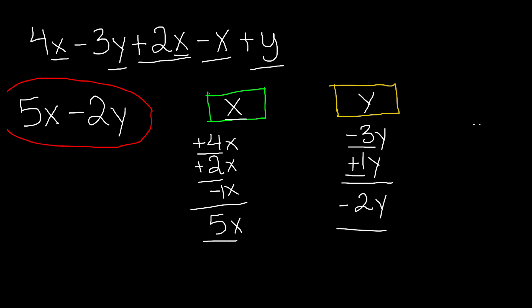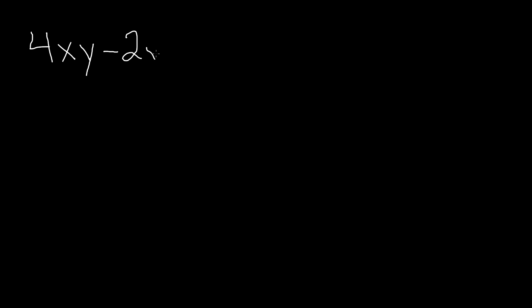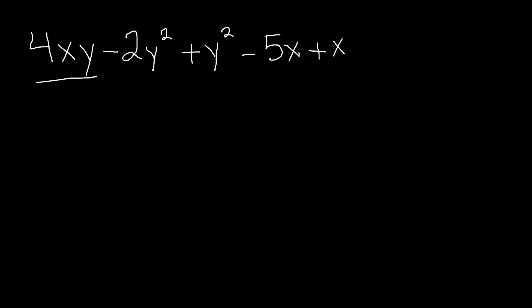Now let's do the final problem. This one is trickier because we're introducing exponents. We have 4xy, minus 2y to the power of 2, plus y to the power of 2, minus 5x, plus x. First things first — find the like terms, because we cannot add or subtract unlike terms. We go through and find 4xy, so I'll create an xy category.